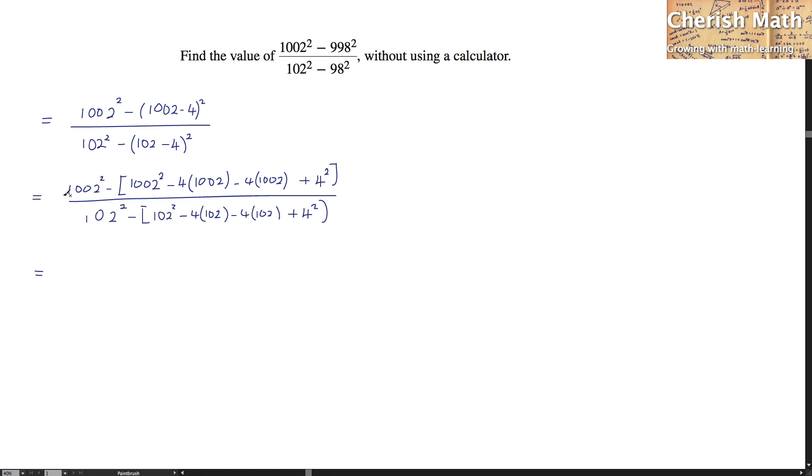1002 square is gone simply because it is minus. It happens to 1002 square as well. Now what's left here is actually 8 multiplied by 1002 minus 4 square is 16. 8, 1002, 4 square is 16.